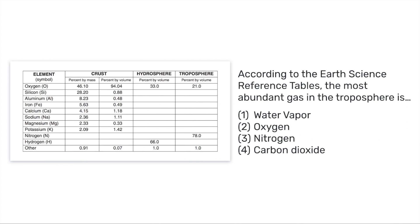Let's take a look at a sample question taken from a Regents exam. It says: according to the reference tables, the most abundant gas in the troposphere is... There are a couple of words we have to pay attention to. The first is 'abundant' — a word we see very often on Regents exams — which basically means most common, or existing in the largest amounts.